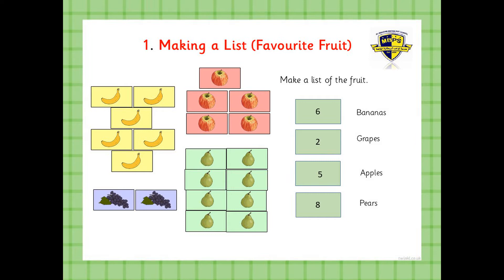We want to buy apples, we want to buy pears, we want to buy bananas and we want to buy grapes. Now when you go to a supermarket, you take a list with you and you write. So your mummy says to you, make a list — you get a sheet of paper. I want you to get a sheet of paper and make your list. Look at the fruit here.